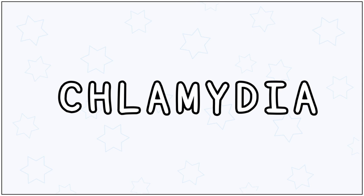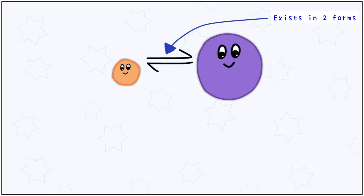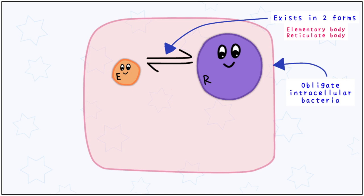Hi everyone, today we are going to look at another organism, chlamydia. Chlamydia exists in two interchangeable forms: elementary body and reticular body. It is an obligate intracellular bacteria, meaning it prefers to exist within host cells.